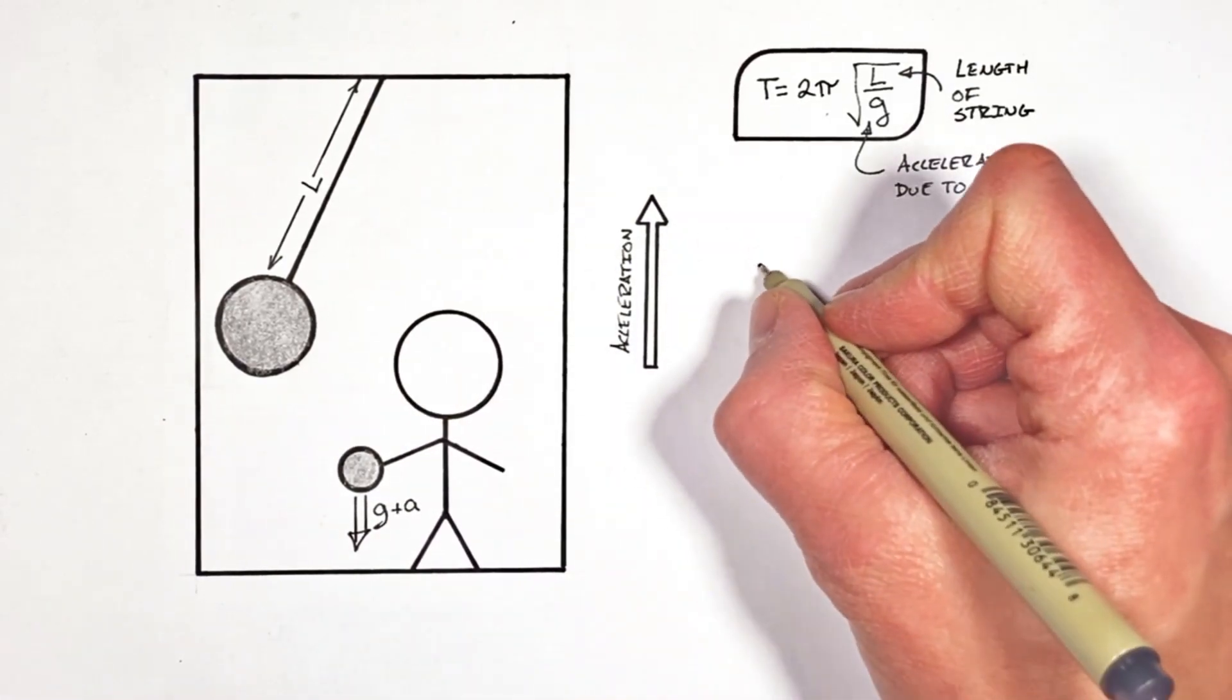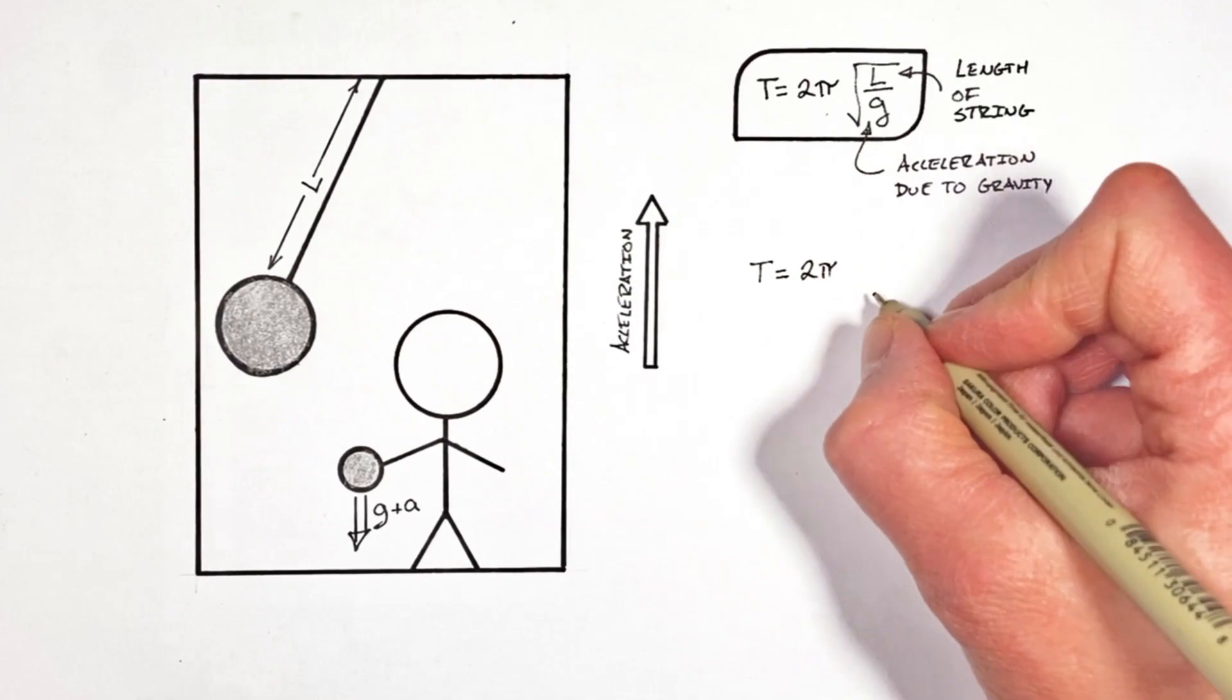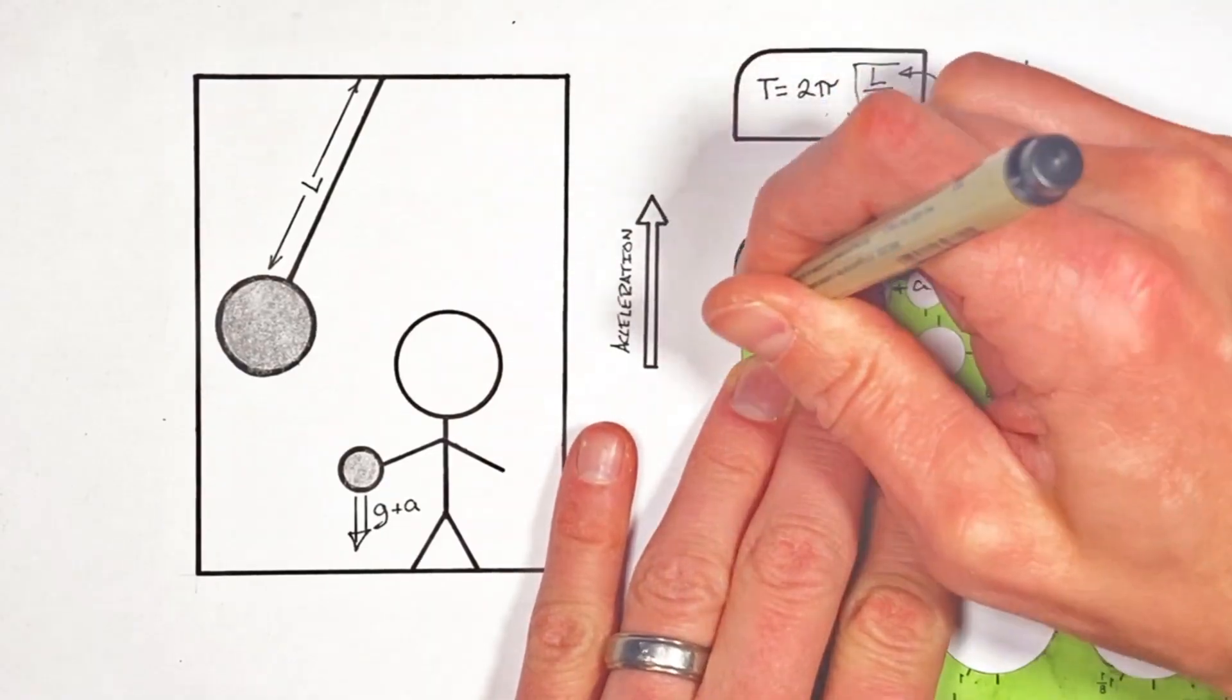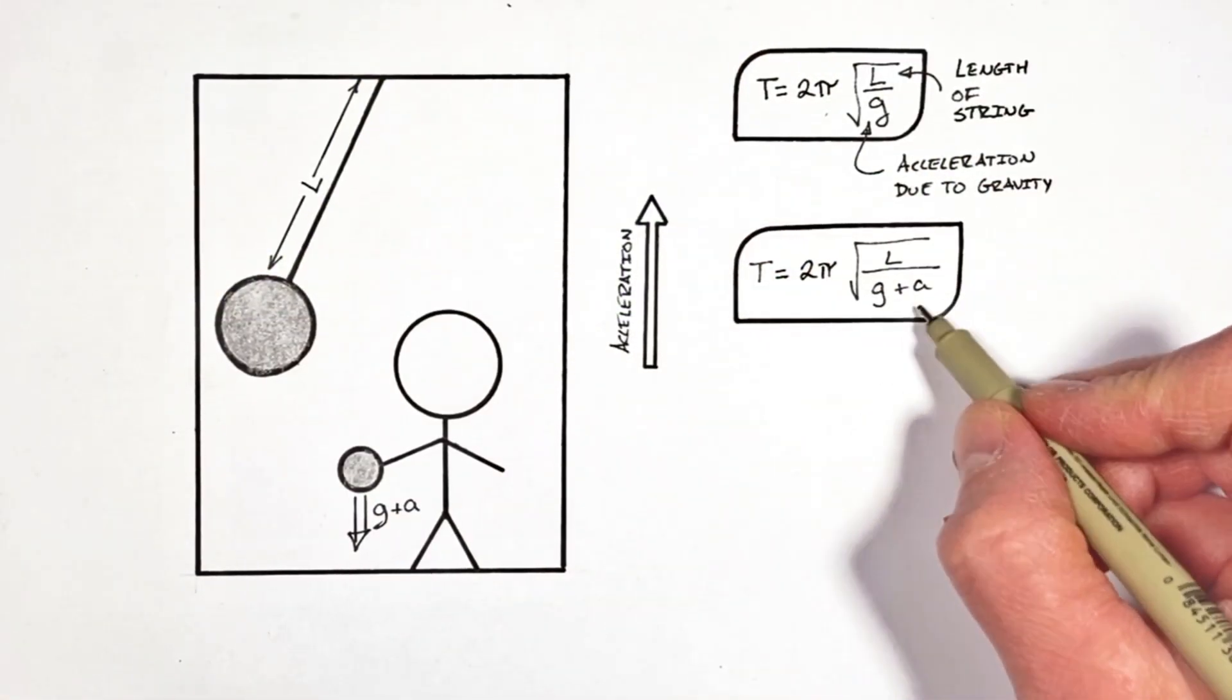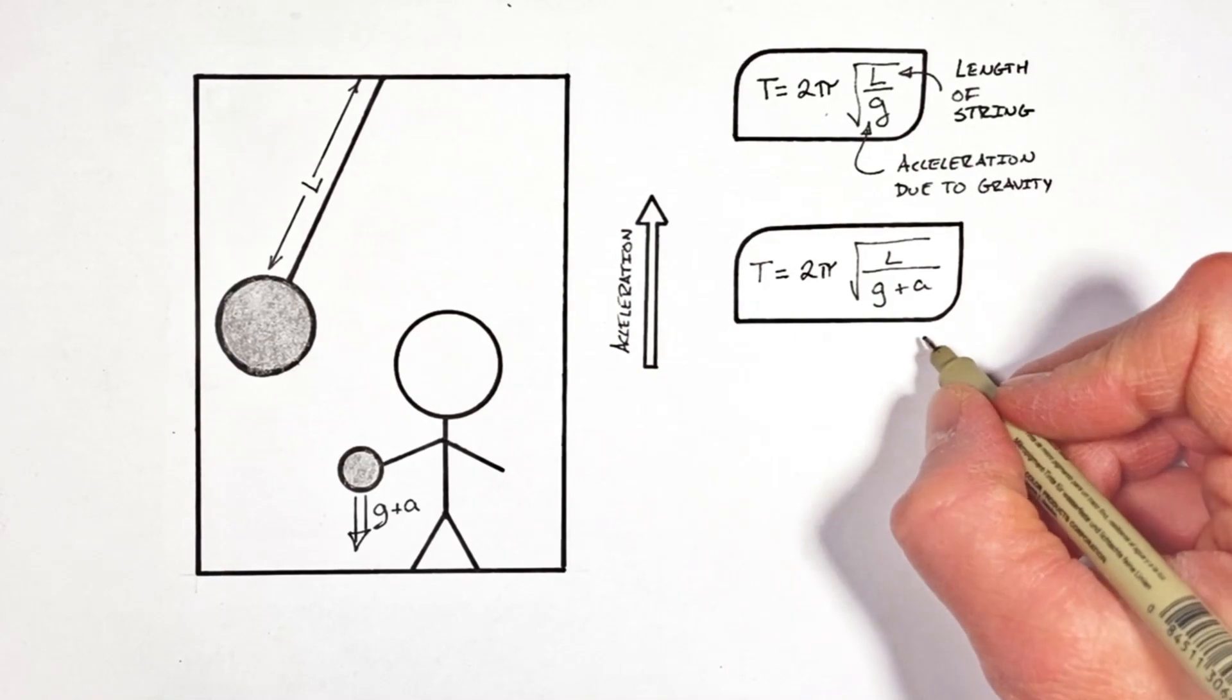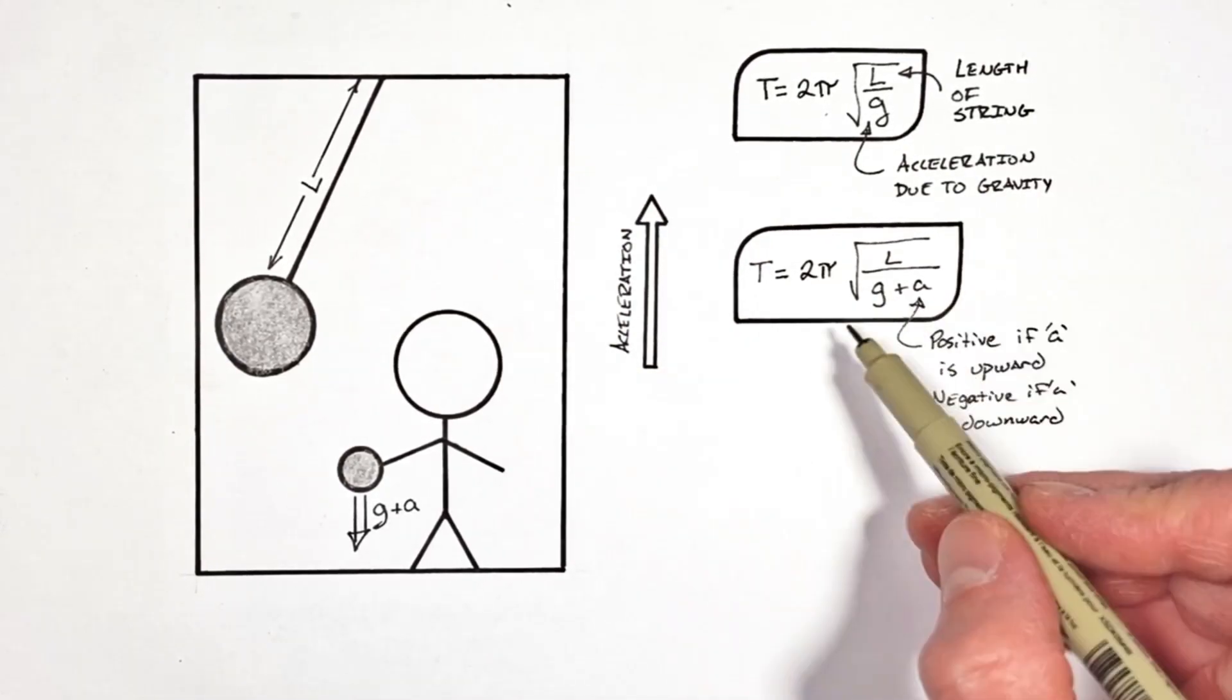So what that means is the period of the pendulum is going to be given by 2π times the square root of l over g plus A, which is actually a relatively simple result. The only real way to screw this up is to put the wrong sign in for A. You see, A needs to be a positive value if the elevator is accelerating upward, and A should be negative if A is downward.